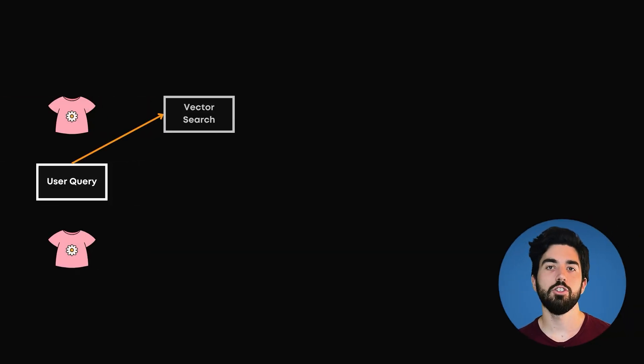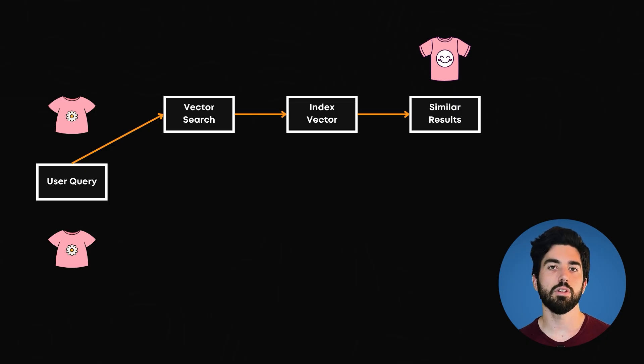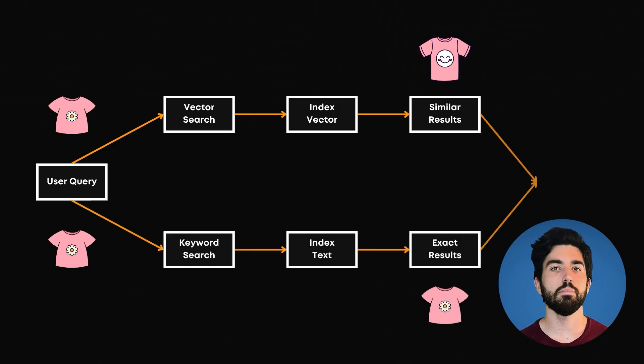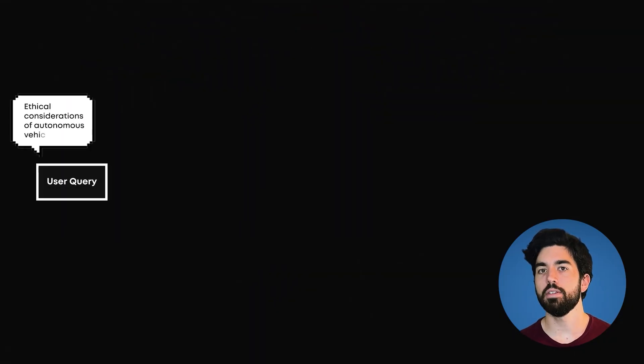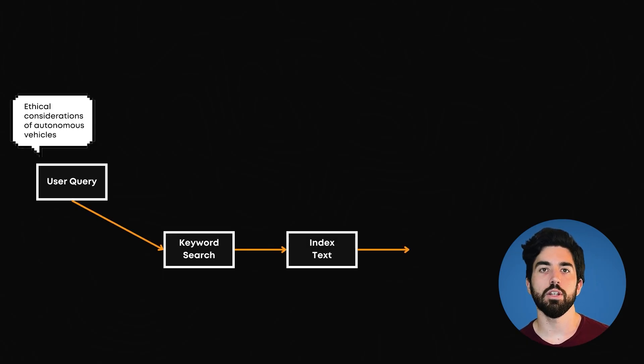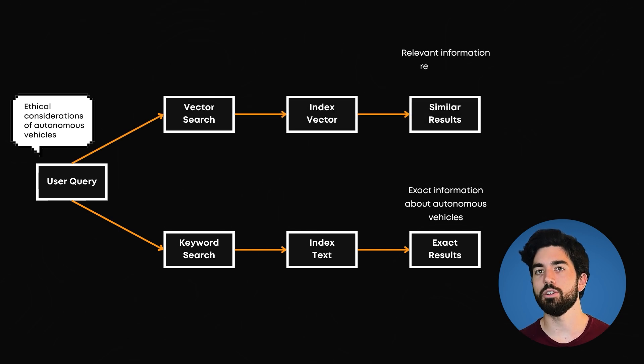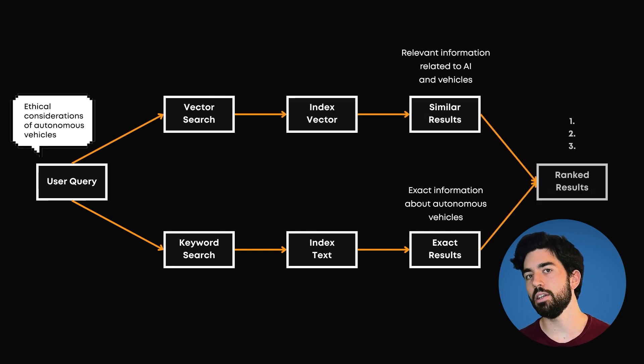For example, in online shopping, hybrid search can help customers find products even if they don't know the exact name. At the same time, it can still find exact matches for product codes. Likewise, for our AI ethics example, if the user types something like ethical considerations of autonomous vehicles, you will find exactly the information about autonomous vehicles, but also will be able to find some broader concerns related to AI and vehicles that might be relevant ethically. Balance, right? It's the best of both worlds.